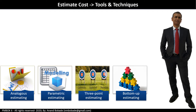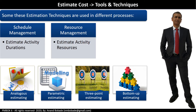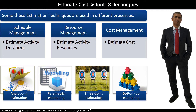Some estimation techniques are used across different processes. In schedule management's estimate activity duration process, analogous estimating, parametric estimating, and three-point estimating are used for duration estimation, and bottom-up estimating for aggregating durations per WBS. In the estimate activity resources process, analogous and parametric estimating are used to estimate the number of resources required. Bottom-up estimating is used for aggregating resources per WBS. Note that three-point estimation is not used during resource estimation.